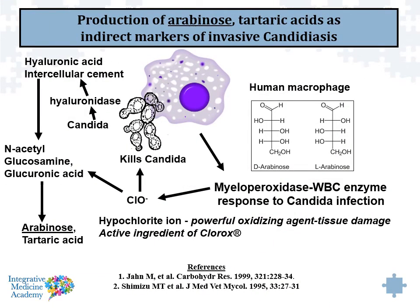One of the things that also happens when candida becomes invasive is the production of different organic acids. One of the most common ones is arabinose. This is something measurable off an organic acids test, and arabinose elevations are an indication of the invasive nature of candida within the digestive system. I want to talk about arabinose in a different way here, in that the chemical structure of arabinose as a sugar has a functional group — a carbon double bonded to an oxygen with a hydrogen — what's called an aldehyde.